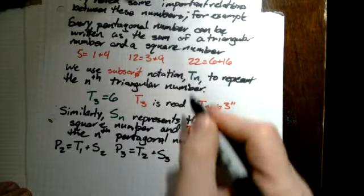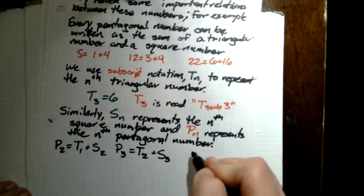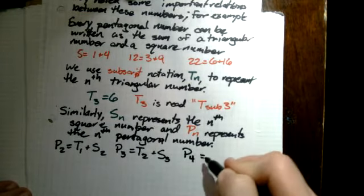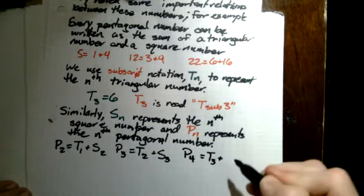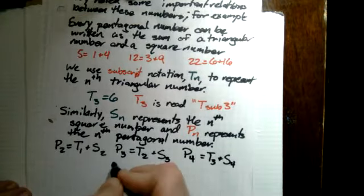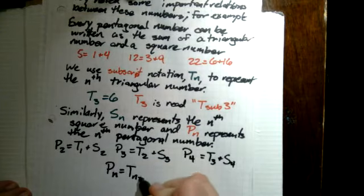And finally, 22 is 6 plus 16. That's P sub 4 equals T sub 3 plus S sub 4. So we could set up a general rule that P sub n equals T sub n minus 1 plus S sub n.